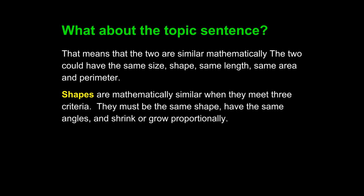We can also add: they must be the same shape, have the same angles, and shrink or grow proportionally. I have changed the content because the student's original answer was mathematically incorrect as well as flawed in writing. This new topic sentence — which is actually two sentences expanded — uses shapes as a subject and 'they,' which refers to shapes.